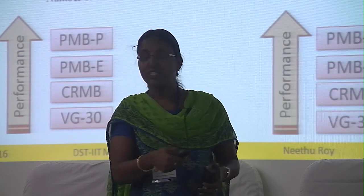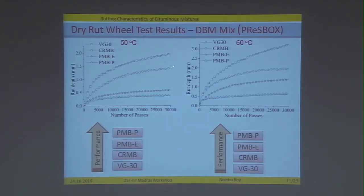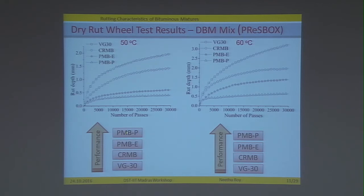Coming to the test results of the DBM mix, done at 50°C and 60°C, the results were consistent at both temperatures: PMB plastomer performed best, followed by PMB elastomer, then crumb rubber modified binder, and finally VG30 — the same performance at 60°C as well.